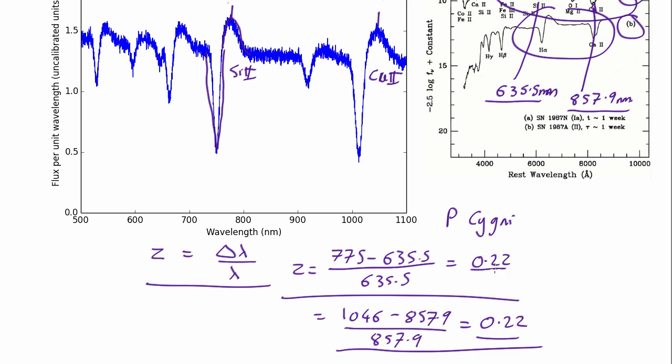Okay so we've learned it's a type 1 supernova, it's at redshift 0.22 which gives us an estimate of how far away it is and how much the universe has expanded. It's still in its early stage because it's got a P-Cygni profile so it must have exploded pretty recently.